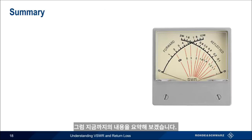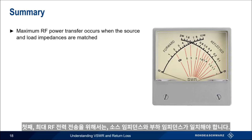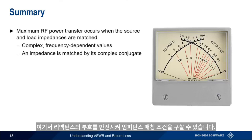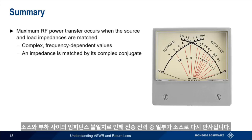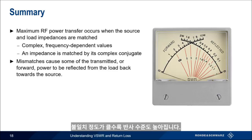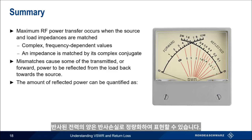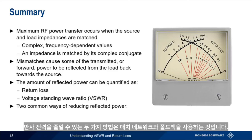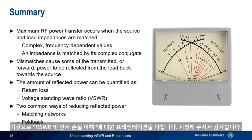So let's summarize what we've learned. Maximum RF power transfer occurs when the impedance of the source and the load are matched. Impedances are complex, frequency-dependent values, and therefore a given impedance is matched by its complex conjugate, which we get by reversing the sign of the reactance or imaginary part. A mismatch between source and load causes some of the transmitted or forward power to be reflected by the load and returned to the source — the greater the degree of mismatch, the greater the level of reflections. We can quantify the amount of reflected power as return loss or as VSWR, and the conversion between these two quantities is very straightforward. The two main ways of reducing reflected power are the use of matching networks and foldback.